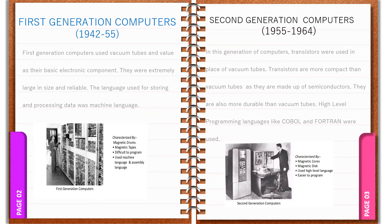There are some advantages of first generation computers. Vacuum tubes were the only electronic component available during those days, and these computers were very fast to calculate. Vacuum tube technology made possible the advent of electronic digital computers. These vacuum tubes were easily available and inexpensive. They were capable of making arithmetic and logical operations. Some disadvantages include: they were very big in size and very slow, with low levels of accuracy and reliability. They were not portable, required air conditioning and constant maintenance, and had limited programming capabilities. Only machine and assembly languages were used.